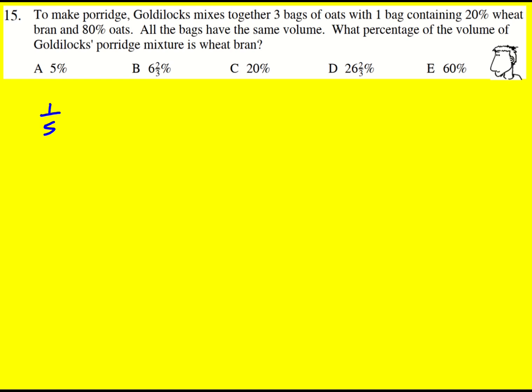So if we then have four bags in total, the overall proportion will be the one-fifth that we have divided by the four bags in total, which gives 1 over 20, or 5 over 100, or 5%. That's a really quick approach.